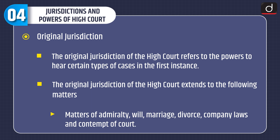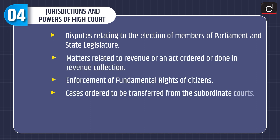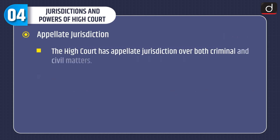The original jurisdiction of the High Court refers to the power to hear certain types of cases in the first instance. It extends to matters of admiralty, will, marriage, divorce, company laws and contempt of court; disputes relating to the election of members of Parliament and State Legislature; matters related to revenue collection; enforcement of fundamental rights; and cases transferred from subordinate courts. The High Courts of Delhi, Calcutta, Bombay and Madras have original jurisdiction in cases of higher value.